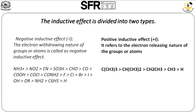Inductive effect is of two types: negative inductive effect, denoted as the minus I effect, and positive inductive effect, denoted as the plus I effect. The negative inductive effect is caused by the electron-withdrawing nature of a group or atom. Examples include NO₂, CN, SO₃H, etc. The positive inductive effect is due to electron-releasing groups attached to the molecule. Examples include alkyl groups.